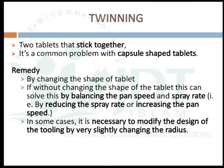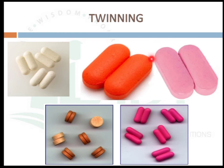The last defect is twinning, where two tablets stick together. This is a common problem with capsule-shaped tablets and can be rectified by changing the shape of the tablet. If the shape cannot be changed, this problem can be solved by balancing the pan speed and spray rate — that is, by reducing the spray rate or by increasing the pan speed. In some cases, it is necessary to modify the tooling design by very slightly changing the radius. This is a picture showing the twinning effect.